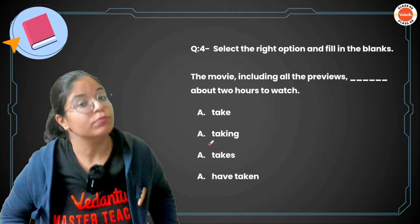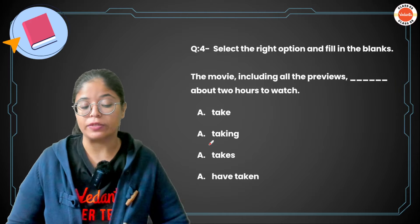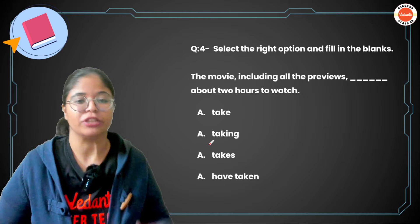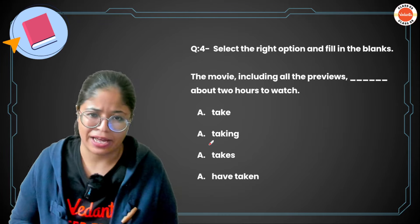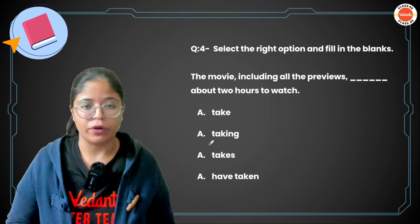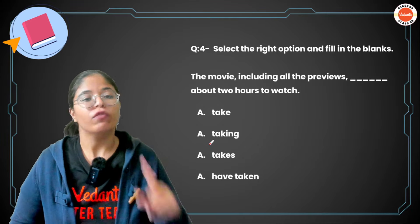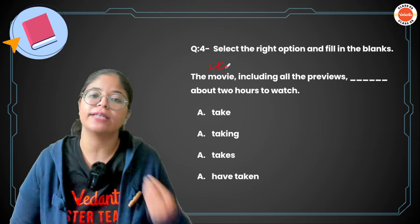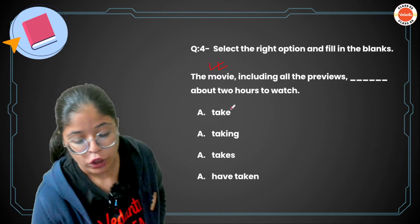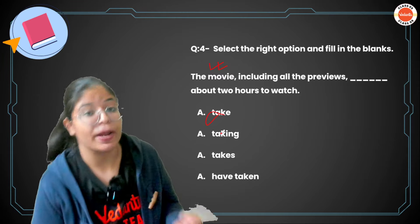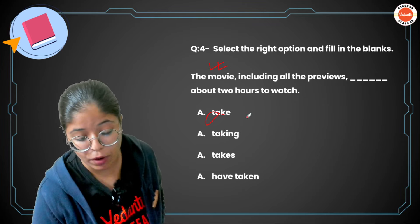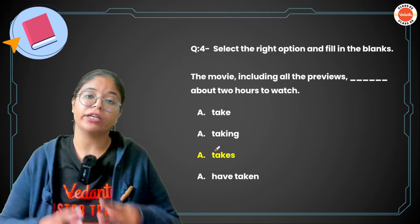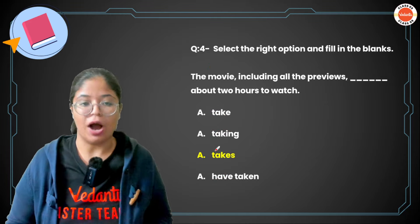Moving on to question number four: 'The movie including all the previews dash about two hours to watch.' This is one of the most favorite topics in subject-verb agreement. When you spot phrases like 'including,' 'together with,' 'along with,' or 'as well as,' you always agree the verb with the first subject. The first subject here is 'movie,' which is singular. So 'take' doesn't work, 'taking' doesn't make sense, and 'have taken' is plural. The only option is 'takes': 'The movie including all the previews takes about two hours to watch.'